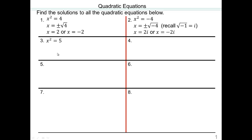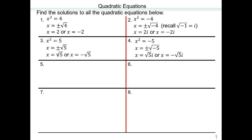Take square root, so plus or minus. So x is either square root 5 or negative square root 5. What if you have negative 5? Take square root, so you get square root 5 i or negative square root 5 i.